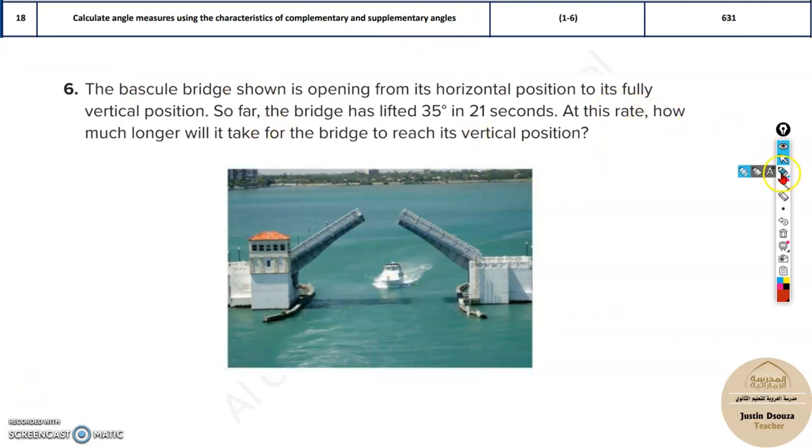Now over here they have told a bascule bridge shown is opening from the horizontal position. So this bridge was like this horizontal. Now it's opened up. You can see it's opened up to an angle of 35 degrees. Now they are asking, it is in 21 seconds it opened up 35 degrees. Now at the same rate, how much longer will it take to reach its vertical position? So it's opening up and eventually it will be upright, vertically. So it will be 90 degrees, right? So now already 35 degrees is done. So this is a complementary angle. You can see this is 90 degrees. So how much angle is remaining over here to go up? So it is 90 minus 35.